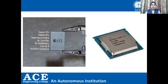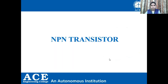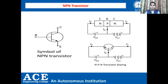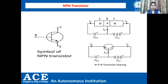Now let us move on to study the NPN transistor. Let us look at the symbol of an NPN transistor and see its biasing. On the left-hand side you can see the symbol of an NPN transistor. As we know, a transistor has base, emitter, and collector. For the NPN transistor also we can see base, collector, and emitter.